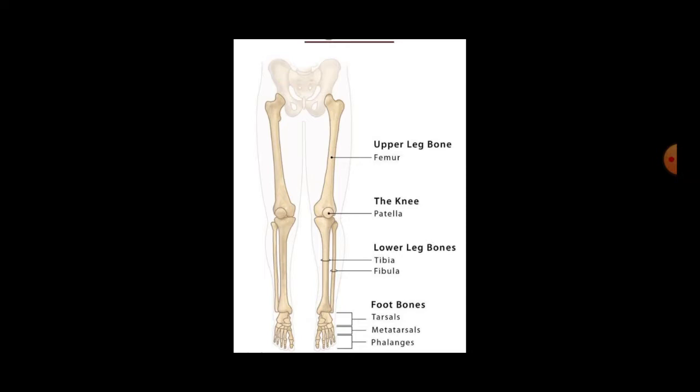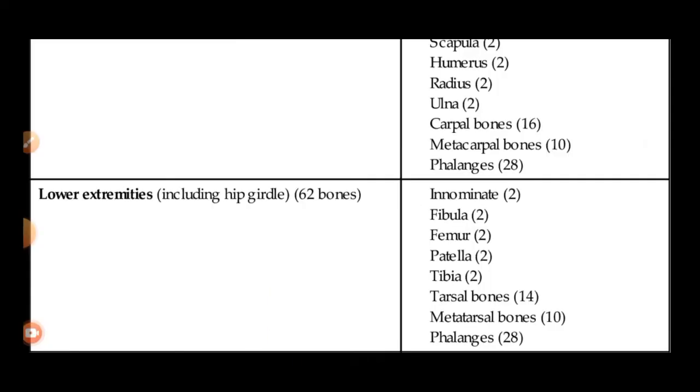The number of bones in the lower limb is also 30, just like the upper limb. So the total number of bones in the lower extremity — counting both sides — is 62.